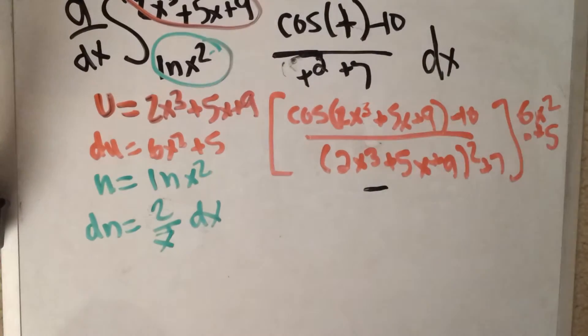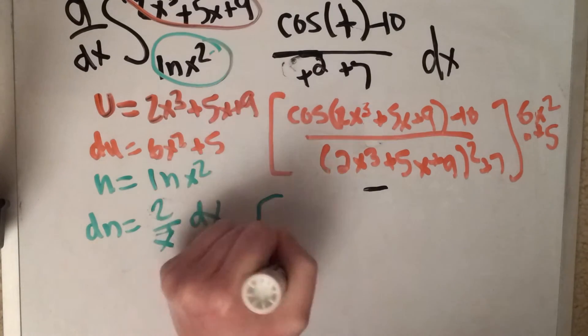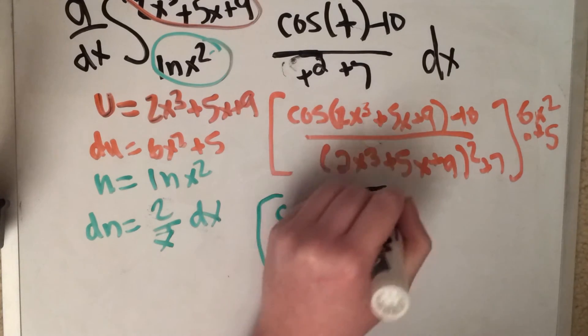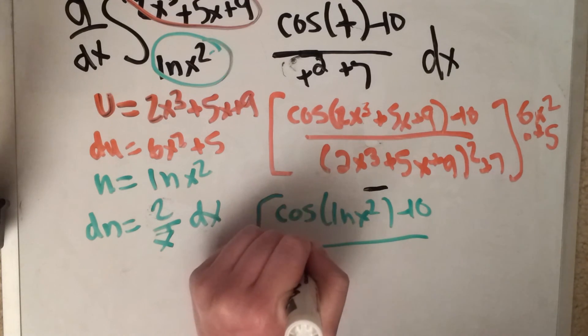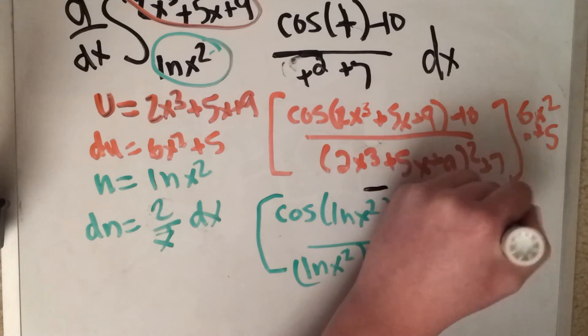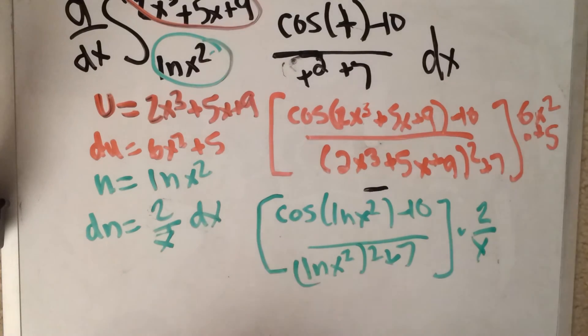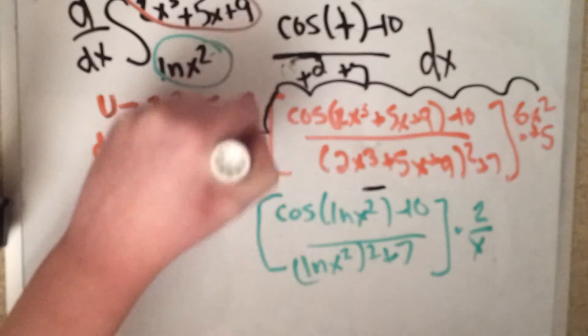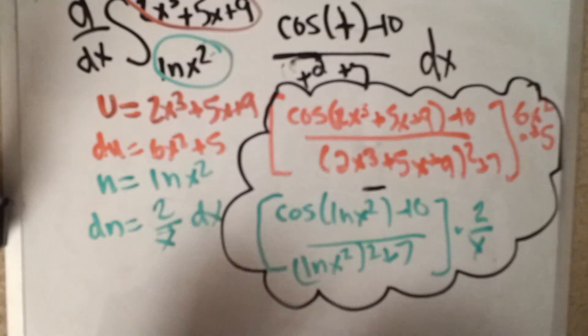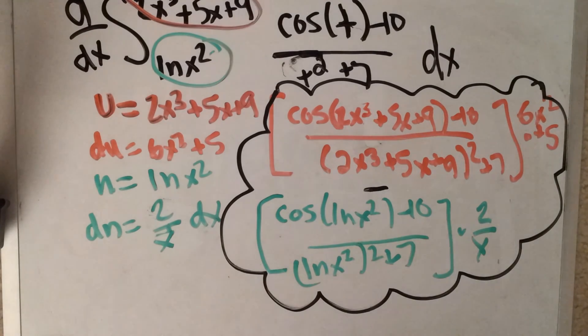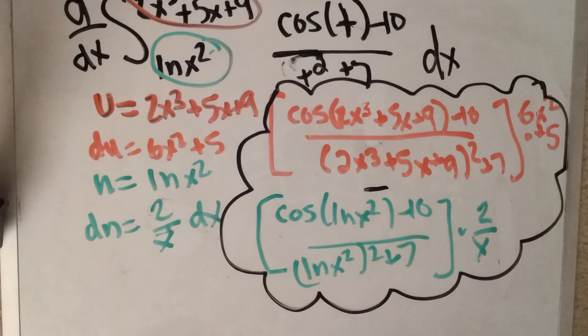Then we're going to subtract this from n. We plug in n now, and n is ln x squared. So cosine of ln x squared minus 10 over ln x squared squared plus 7. Now also chain rule, chain rule. What is the derivative? It is 2 over x, so don't forget to multiply that. And there you go, this whole thing is going to be your answer. And you can definitely simplify it further, but that's algebra, that's simply algebra, so I'm here to teach you calculus. And that is it for the FTC2. Thank you for watching, and I hope you learned something and enjoyed. Thanks, bye.